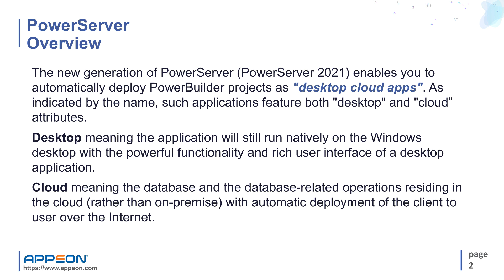As indicated by the name, such applications feature both desktop and cloud attributes. Desktop meaning the application will still run natively on the Windows desktop with powerful functionality and rich user interface of a desktop application. Cloud meaning the database and database-related operations reside in the cloud rather than on-premise, with automatic deployment of the client to users over the internet. In other words, you can think of desktop cloud apps as the modern desktop app that requires an internet connection to install and run.